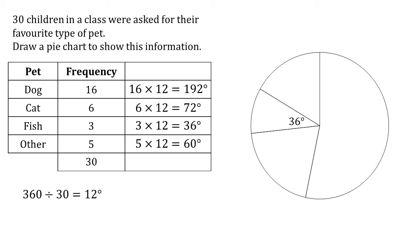We measure another 36 degrees round — there's the fish slice. Now we've only got one more slice left, which is a 60 degree slice. It's always a good idea to check with the protractor that you've got 60 degrees left and you haven't made any mistakes as you've gone round.